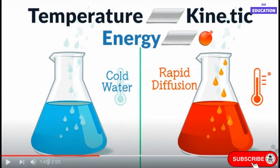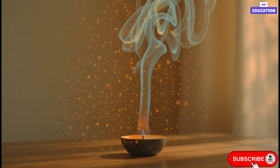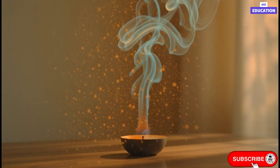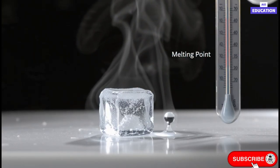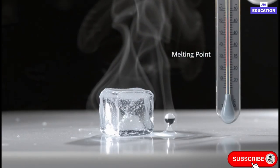For example, when we light an incense stick in one corner of a room, its fragrance spreads throughout the entire room within minutes. This happens because the gas particles of air are in constant motion, and mix with the fragrant particles of the incense. This process is known as diffusion.